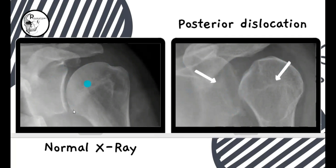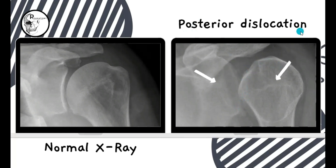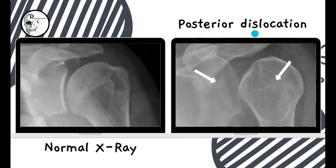This means the head of the humerus has been dislodged backwards, just behind the scapula — that is why you can't visualize it clearly. Posterior dislocation is not a common type. It occurs in events like road traffic accidents when sudden pressure on the head of the humerus drives it backwards, and that is called posterior dislocation of the shoulder joint.